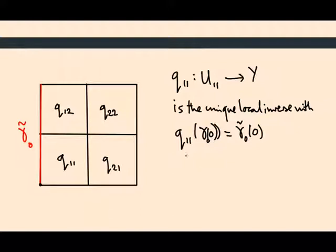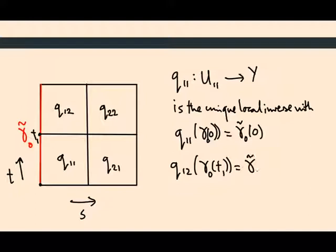Similarly, q_12 is uniquely determined by the condition that gamma_0 of whatever time this is, maybe you call it, if this coordinate is the s coordinate and this is the t coordinate, this is sort of t_1, is equal to gamma tilde 0 of t_1. And you could continue if you have more squares upwards.